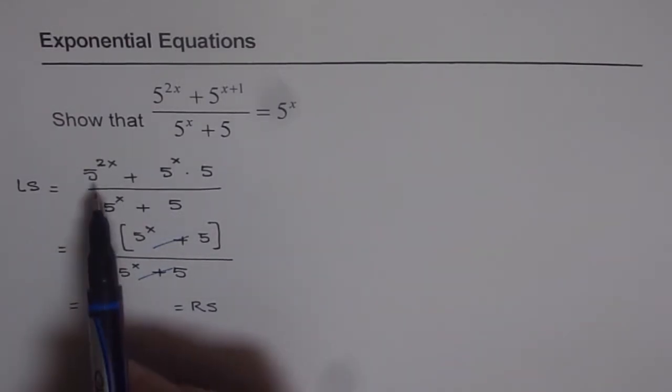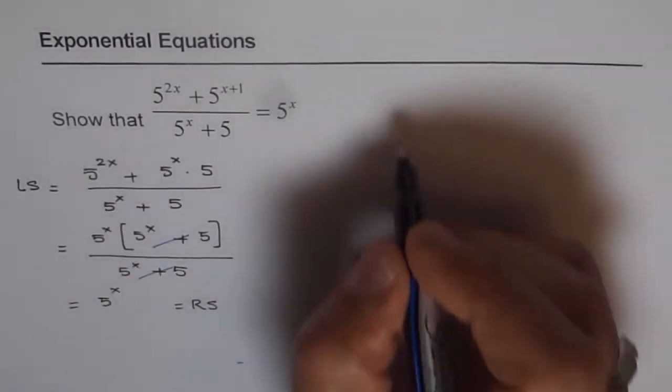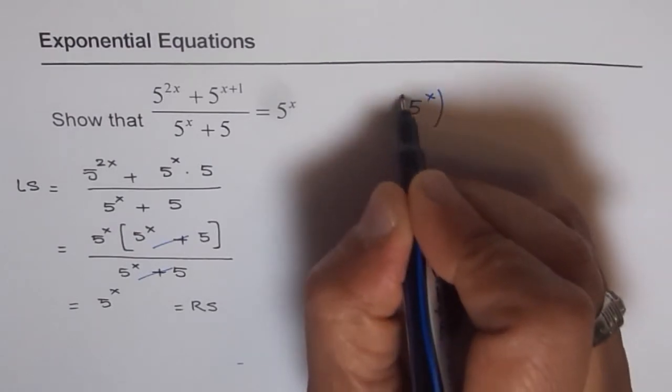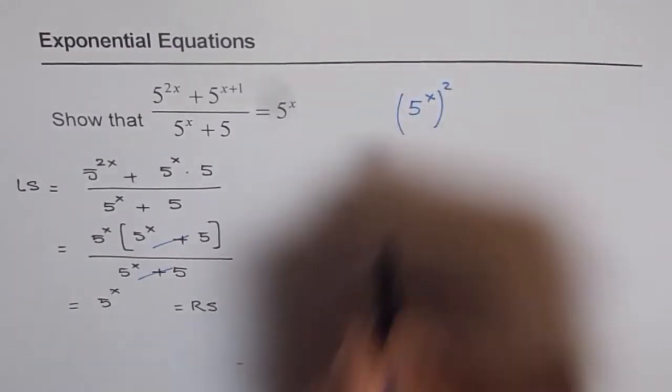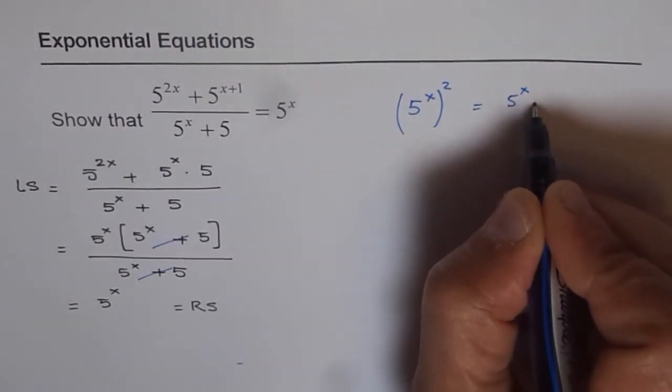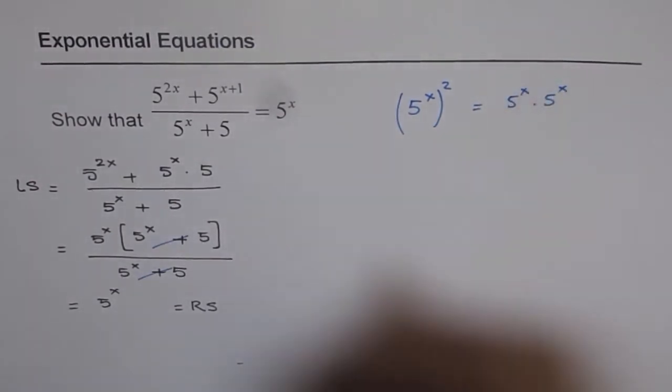Let me explain the very first step. 5 to the power of 2x could also be written as 5 to the power of x, and then square. Or it could also be written as 5 to the power of x times 5 to the power of x.